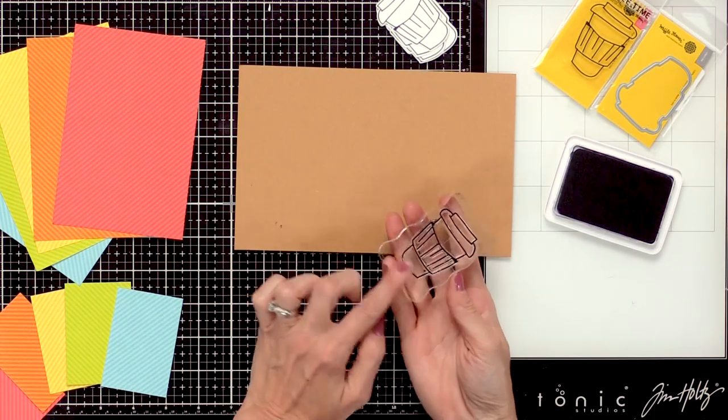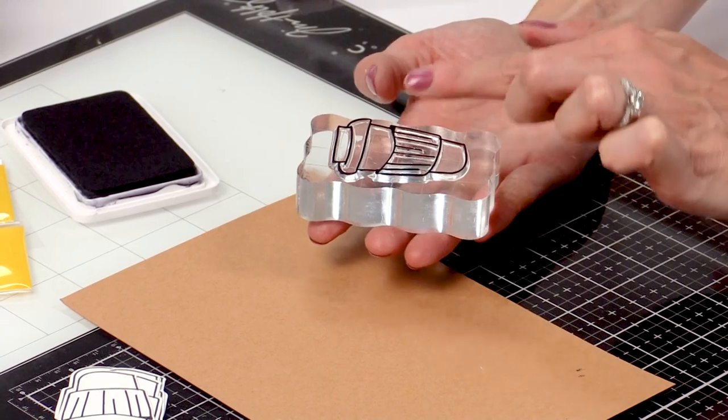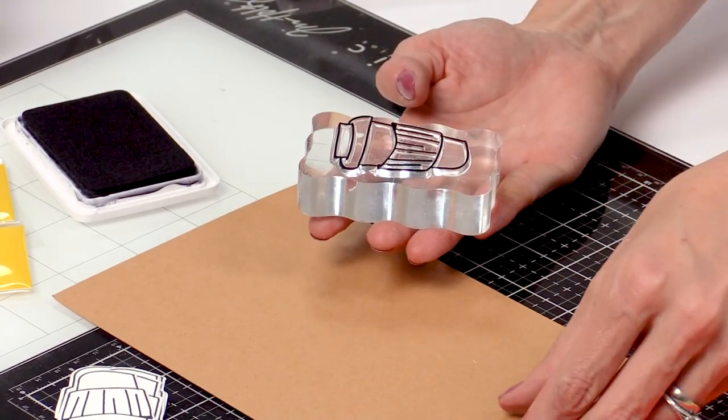For the craft paper I only want this wrapper around the coffee cup to be in the craft so that's the only portion that I need to get on this craft paper.